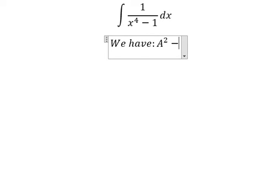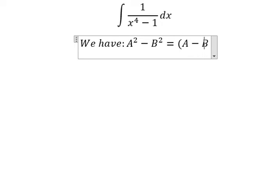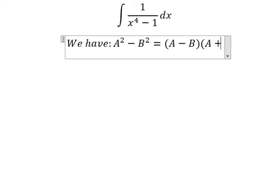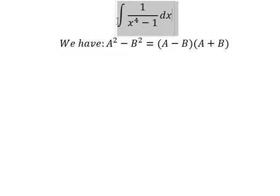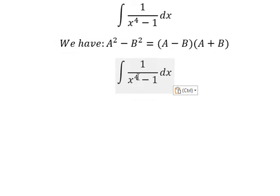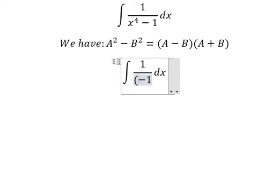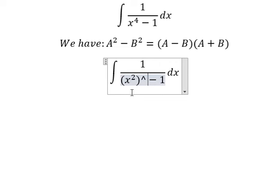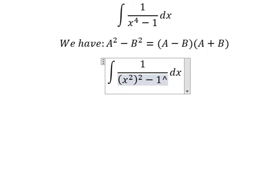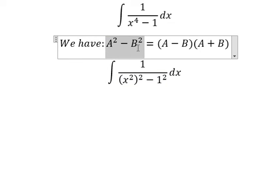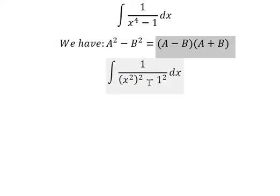A square minus B square equals (A minus B) multiplied by (A plus B). So this one, we have x to the power of 4 minus 1. That is about 1 squared in here. We need to transform this one into this one.